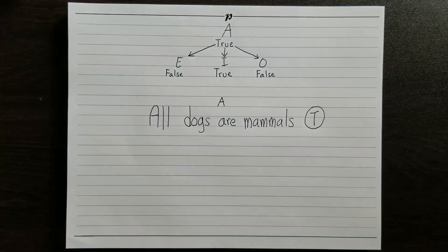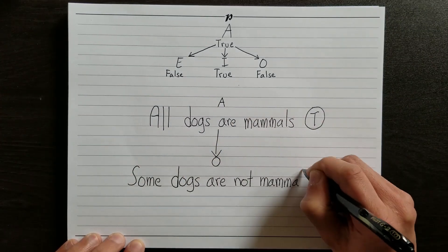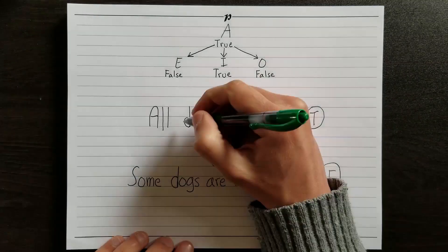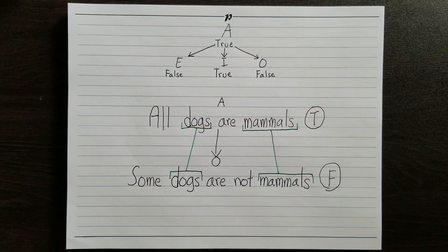For example, if I know that an A-type statement is true — say, that all dogs are mammals — then I automatically know that its corresponding O-type statement, that some dogs are not mammals, is false. It's important to note that these relations only hold when the statements are about the same things.